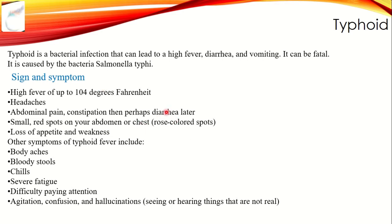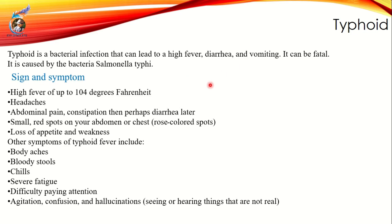Salmonella typhi is an intracellular bacterium — it lives inside cells. Because of this, it is difficult for the immune system to recognize and kill it. Salmonella typhi only infects humans; it is not found in other species or organisms. Transmission is human to human.